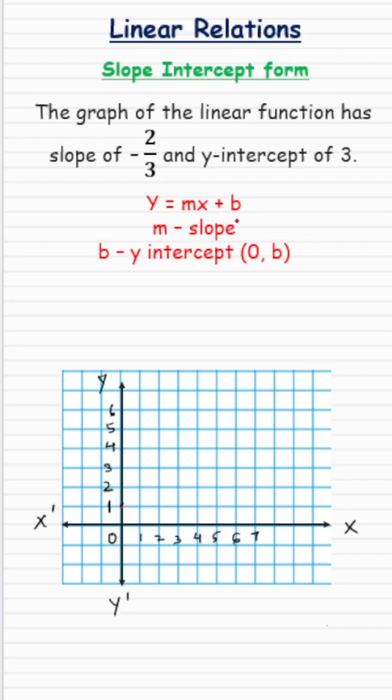Y equals mx plus b is the slope intercept form of the equation of any linear function, where m is the slope and b is the y-intercept. That means the line cuts the y-axis at 0 comma b.